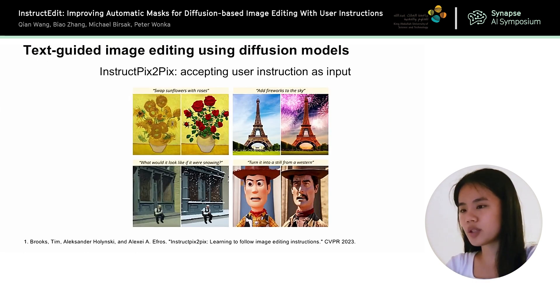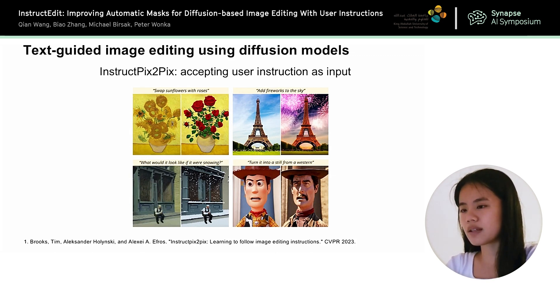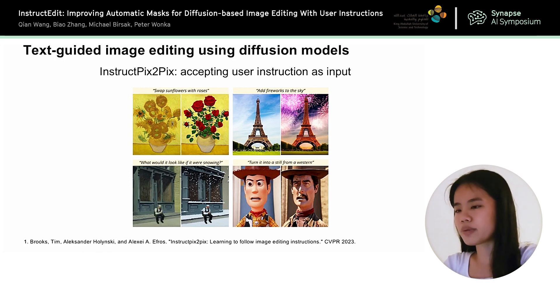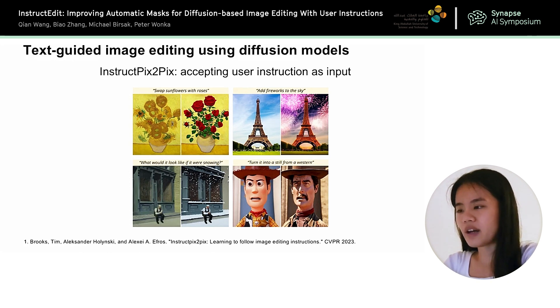For the work InstructPix2Pix, it can directly accept user instructions as input. For example, the user input becomes 'swap sunflowers with roses' or 'add fireworks to the sky.'